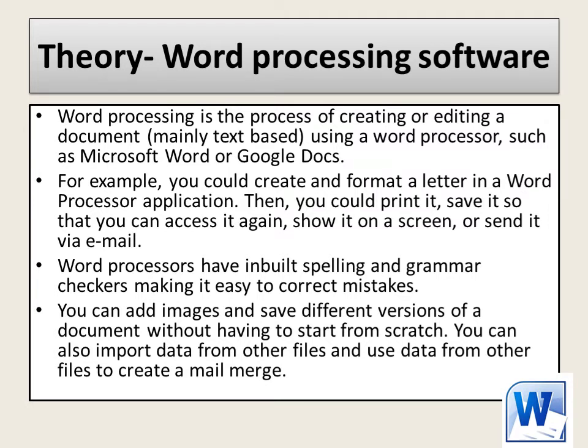Let's go through some theory — word processing software first. Word processing is the process of creating or editing a document, and it's mainly using text. It's using a word processor, such as Microsoft Word, or maybe Google Docs. You might want to create a letter in a word processor application. Then that'll allow you to print it, save it, maybe access it later, edit it, and then you can also attach it as an email.